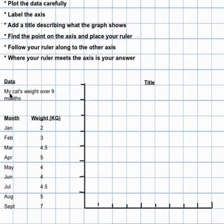Our data is my cat's weight over the last nine months. So my cat's name is Ruby, and I measured his weight in January, he was only two kilograms. In February he was three kilograms, and in March he was four and a half kilograms. In April he was five kilograms, in May he was four, in June he was four kilograms, in July he got up to four and a half kilograms, in August he was five kilograms, and in September he was seven kilograms.